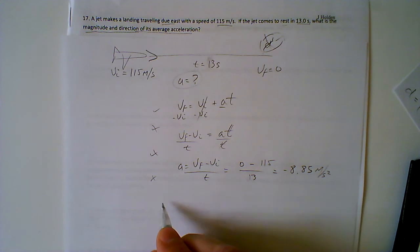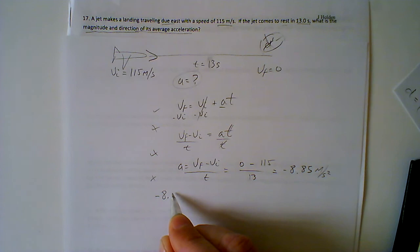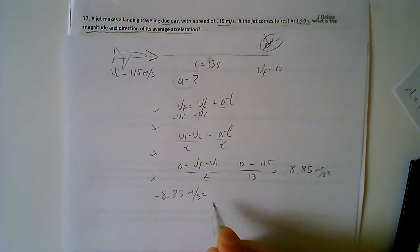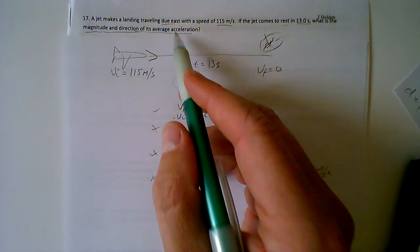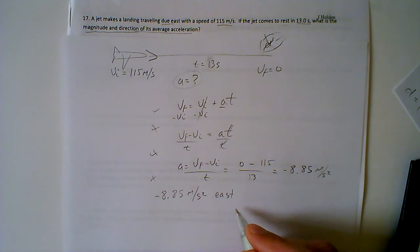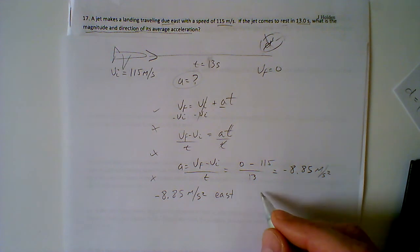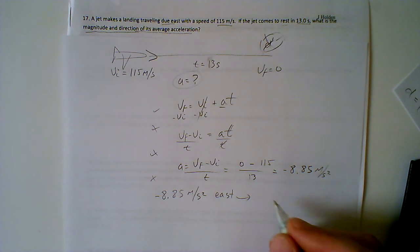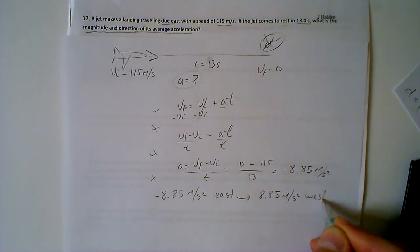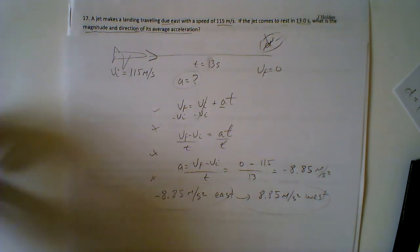For our final answer — it's good practice to rewrite it at the very end — you're decelerating at a negative acceleration of 8.85 meters per second squared. We know it was going east, so there are two ways to express this: you can say negative 8.85 meters per second squared east, or equivalently 8.85 meters per second squared west. Either of these would be a good answer.